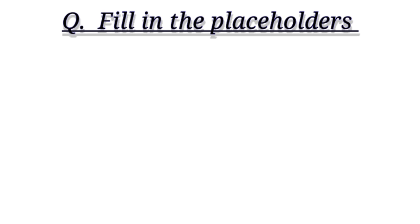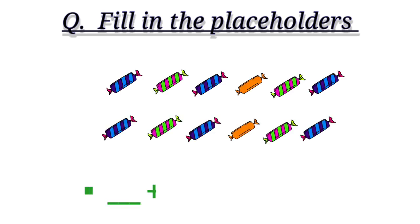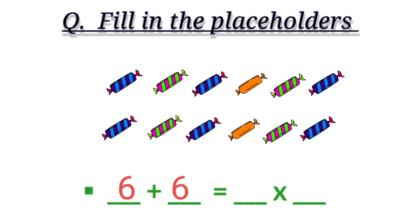Next question: dash plus dash equals to dash multiplied by dash. Children, in the given picture, how many rows are there? Yes, very good — we have two rows. And how many toffees are there in each row? That's right, we have six toffees in each row. That means six plus six equals to two times six, that is two multiplied by six.